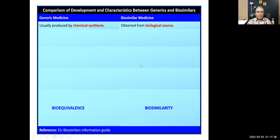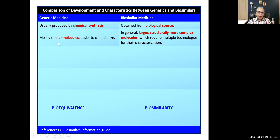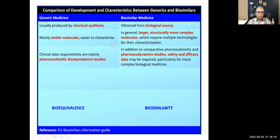Now let's address the difference between bioequivalence and biosimilarity. Generic medicines are chemically synthesized, producing smaller molecules, and require pharmacokinetic bioequivalence studies. Biosimilars come from biological sources, are larger and structurally more complex molecules, and require a much broader assessment: pharmacodynamic studies, safety and efficacy data, full pharmaceutical quality data, and additional quality studies comparing structure and biological activity.